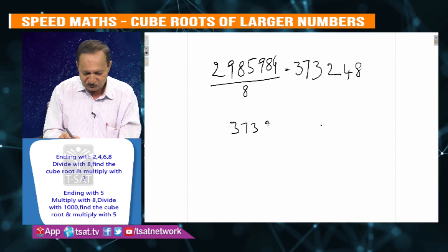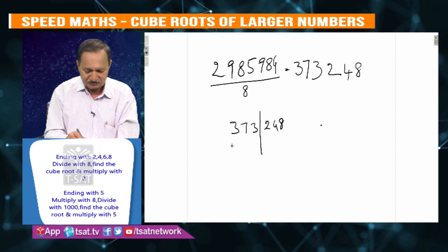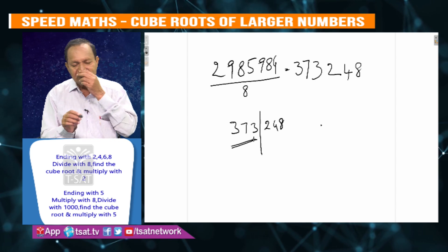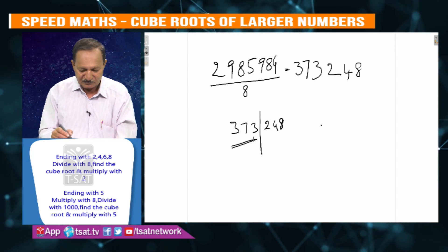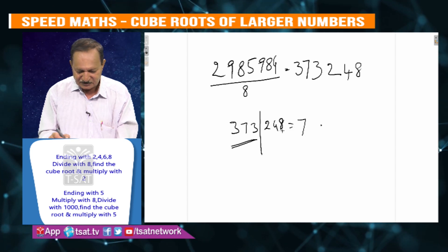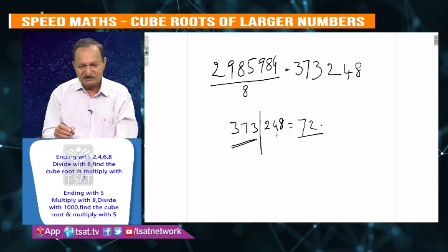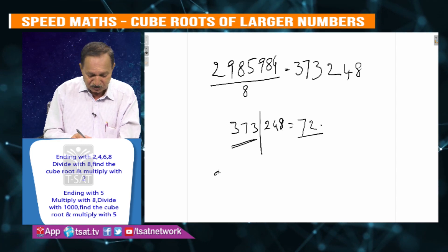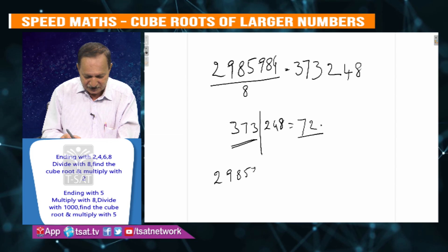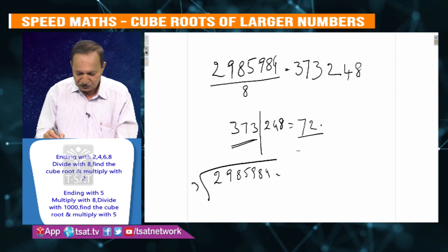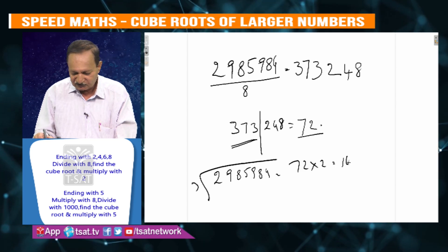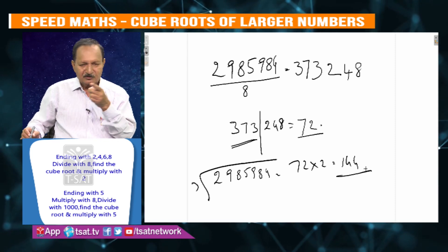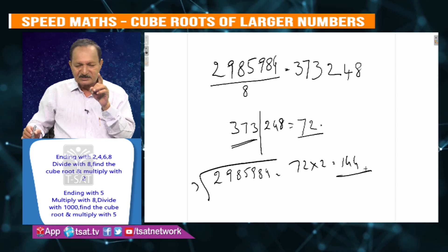373248 — a cube can't be equal to 373. 7 cube is 343, 8 cube is 512, so 7 can't be equal. The last number 8 gives 2 and the exception is 8, so 2 gives 3 and 7 gives 3. So cube root of 2985984 is 72 into 2, which is 144.